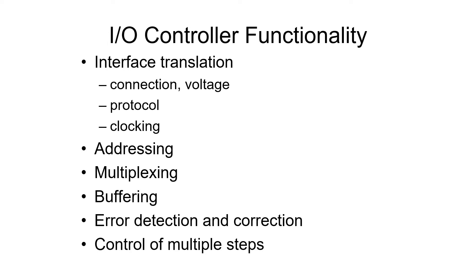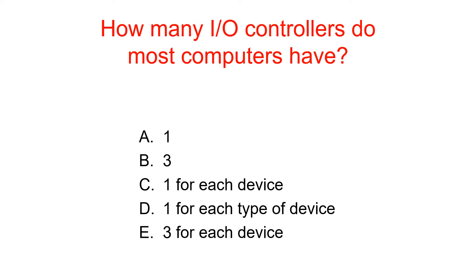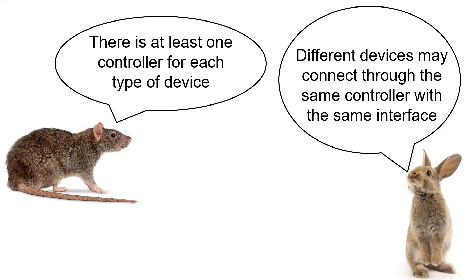Controlling some devices takes multiple steps, and an I/O controller may initiate those multiple steps. There is at least one controller for each type of device. Different devices may connect to the same controller with the same interface — for example, different types of devices may all plug into the computer through a USB port, requiring one USB controller to connect to them.